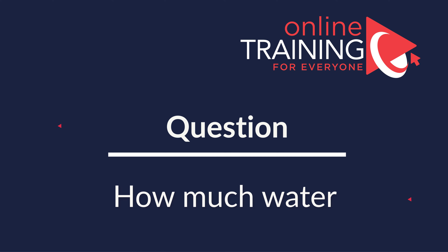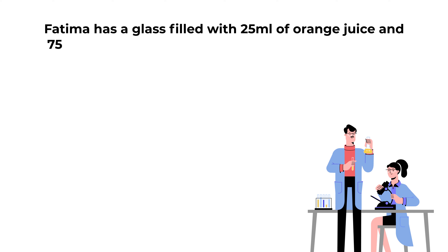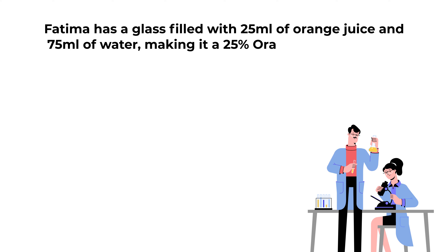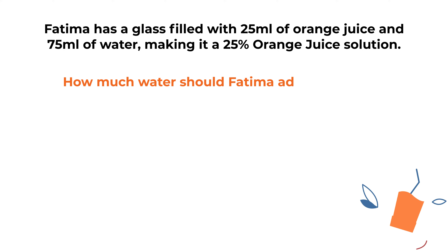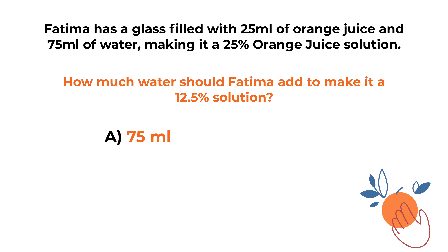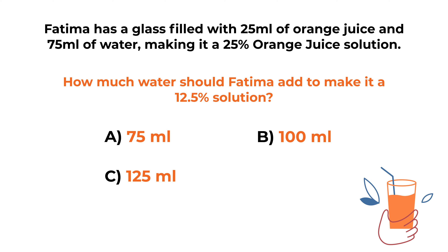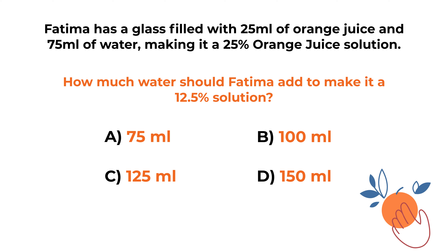Here's a question you might often see on the test. Fatima has a glass filled with 25 milliliters of orange juice and 75 milliliters of water, making it a 25% orange juice solution. How much water should Fatima add to make it a 12.5% orange juice solution? Choices: A) 75 mL, B) 100 mL, C) 125 mL, D) 150 mL.